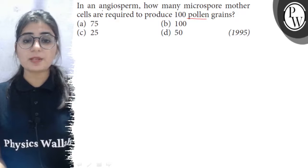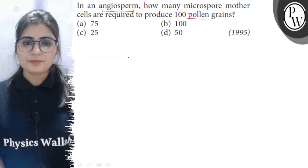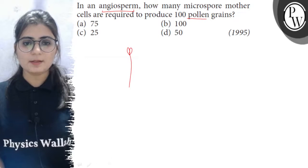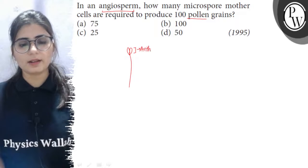So, angiosperms are the flowering plants and in them, stamen is there, the male reproductive part is stamen and these bilobed structures of stamen are called anther.